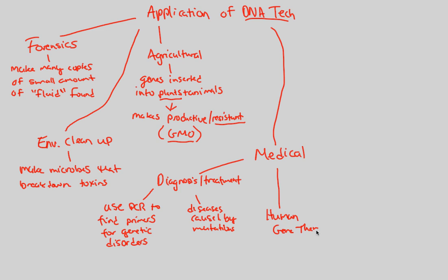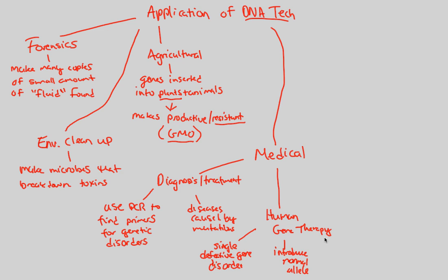There's another concept known as human gene therapy — a quite controversial topic in the medical field right now. The idea is to look at a single defective gene disorder in a human. We can manipulate that gene and introduce what we consider the normal allele, because we can sequence normal DNA and determine what needs to be created, then try to insert it into the defective region. This is often used in bone marrow transplants and also for an immunodeficiency known as SCID, which also utilizes human gene therapy.